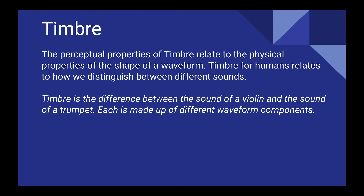Timbre: the perceptual properties of timbre relate to the physical properties of the shape of a waveform. Timbre is how humans distinguish between different sounds. For example, a piano and a cello both playing middle C — or better, a cello and a trumpet both sustaining notes — sound different because they have different harmonic profiles. Timbre is the difference between the sound of a violin and a trumpet; each is made up of different waveform components.